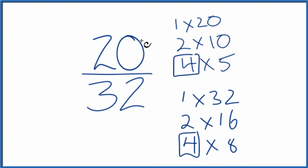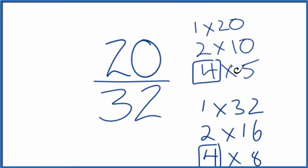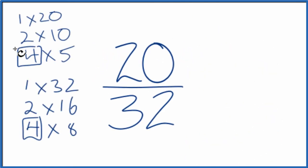So we'll divide 20 by four, 32 by four, and we'll have simplified the fraction 20/32. Let's move these over here. 20 divided by four is five, and then 32 divided by four is eight.